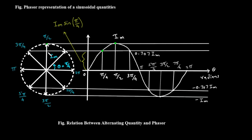As it rotates to 3 pi over 4, its vertical height decreases. At pi, or 180 degrees, the phasor points straight to the left — its vertical height is again 0, and the sine wave crosses the horizontal axis. As it moves into the bottom half of the circle, its vertical height becomes negative. At 3 pi over 2, or 270 degrees, it points straight down. Its height is negative I sub m, and the sine wave hits its negative peak. Finally, as it rotates back to 2 pi, or 360 degrees, it returns to the starting position, its height is 0, and the sine wave has completed one full cycle. So you can see that a sine wave is simply the unfolding of the vertical projection of a rotating phasor over time or angle — this is the fundamental link between the two representations.